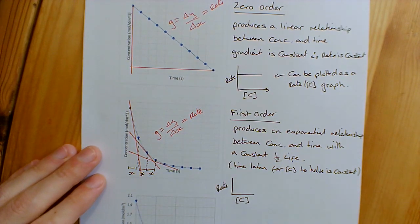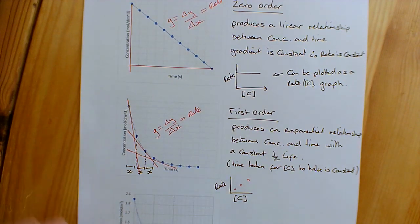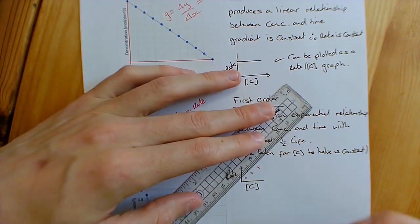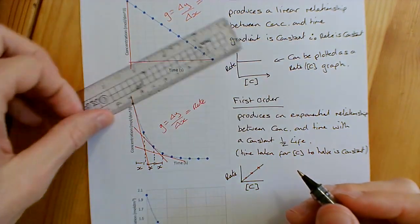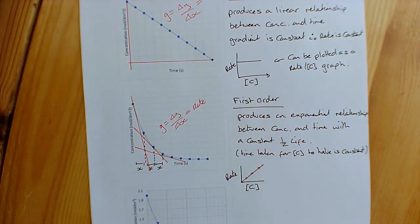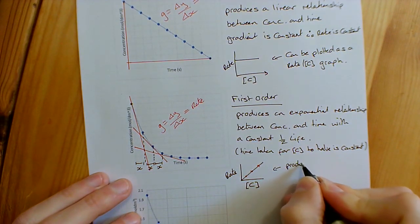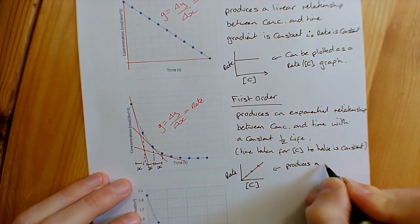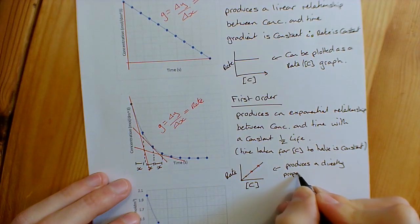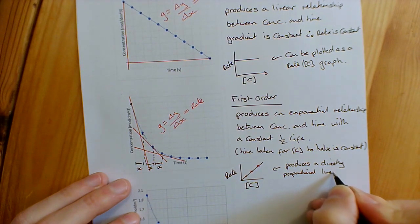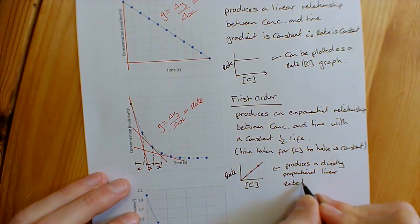Plot your three points on a rate-concentration graph, and if the reactant is first order, you will get a nice directly proportional linear relationship — confirming it is first order.